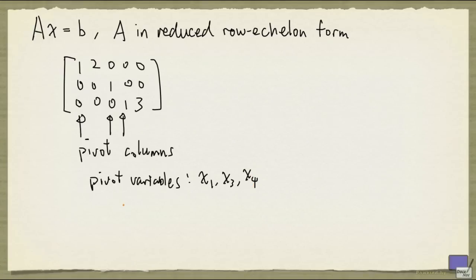The remaining variables are called free variables. In this case, there's only one, and that's x2.